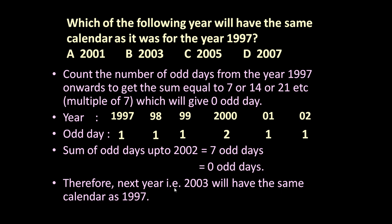Therefore, the next year, 2003, will have the same calendar as 1997. After 1997 up to 2002, there are seven odd days, or zero odd days. So the next year, 2003, will have the same calendar.